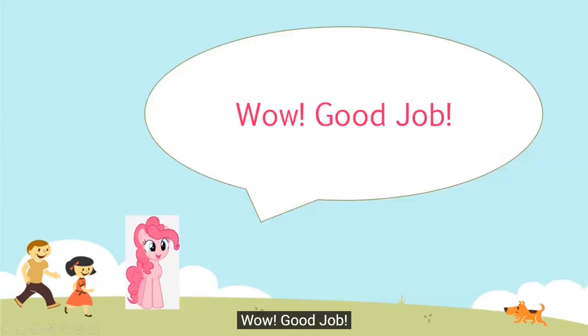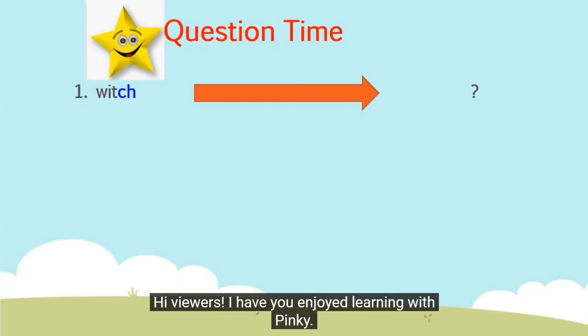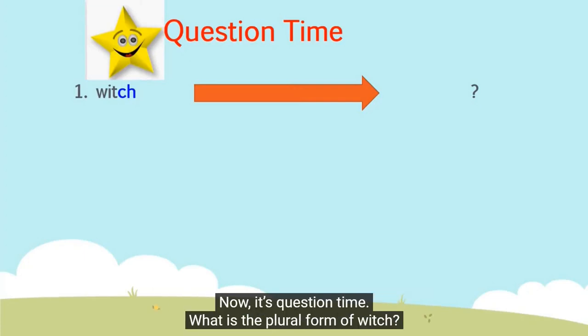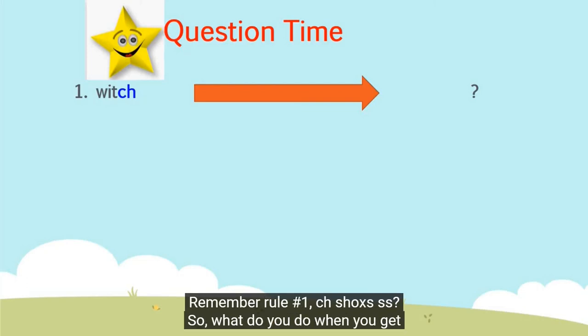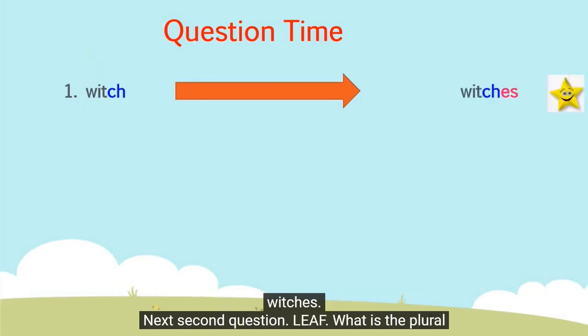Wow! Good job! Hi viewers, I hope you enjoyed learning with Pinky. Now it's question time. What is the plural form of witch? Remember rule number one — CH, SH, O, X, S, SS. So what do you do when you get words which end with CH? That's right — we add ES to the word and it becomes witches.